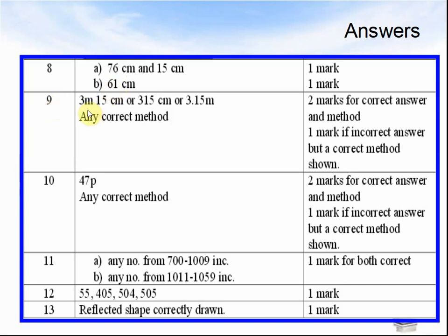Question 9. The answer was 3m 15cm or 315cm or 3.15m. Any correct method is good. Question 10, 47 pence is the answer. Question 11, any number from 700 to 1009 inclusive. Any number from 1011 to 1059 inclusive.